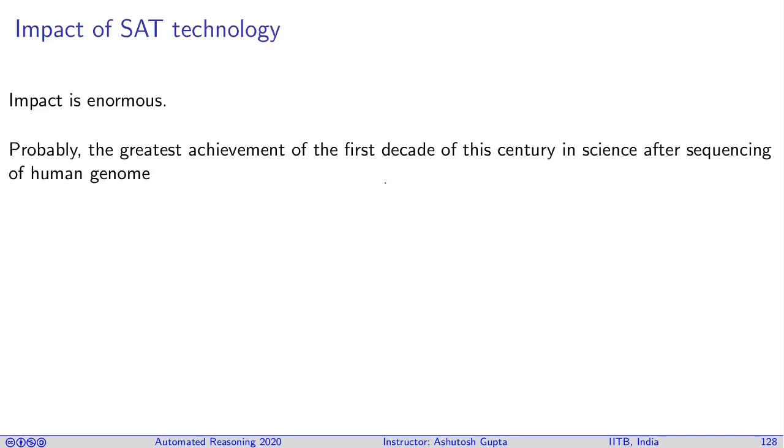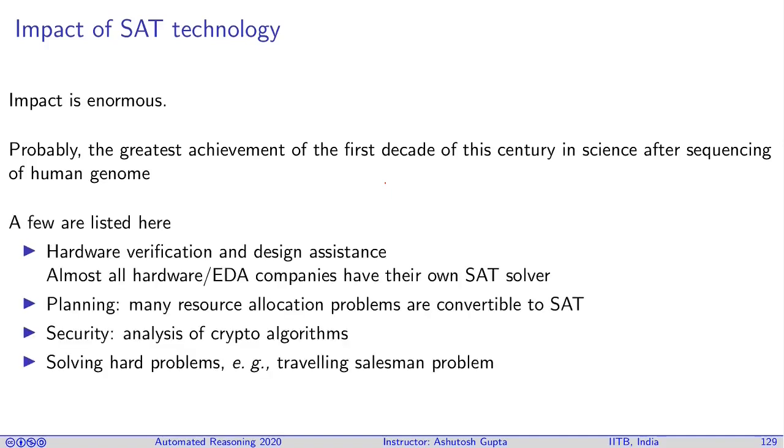Mini revolution means that now you can use SAT technology to solve real problems, and it has significant impact on, for example, chip designing, planning, security of cryptography algorithms, and solving various hard problems. For example, if you want to schedule classes in an institute like IIT Bombay, you can use a SAT solver to optimally find the scheduling. However, it's not widely deployed, but this technology is possible.